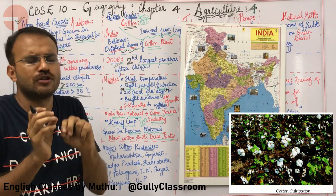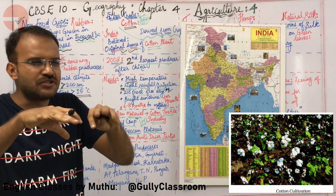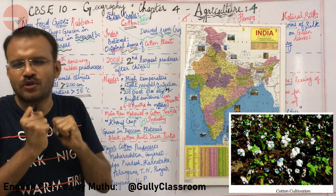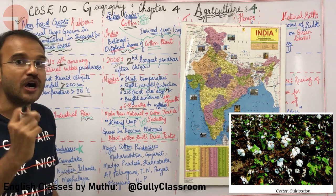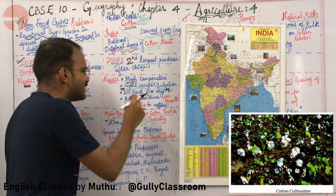Frost-free days means the crop should not get frozen. Cotton is also a long-term crop — it needs six to eight months to mature.